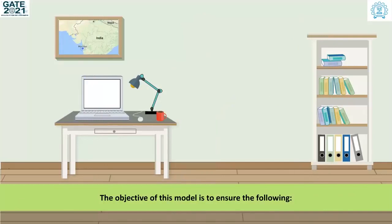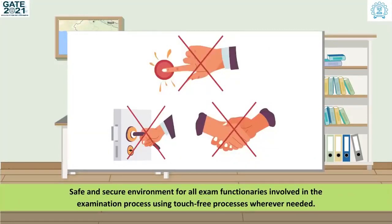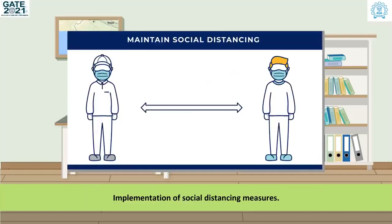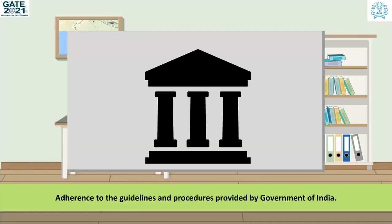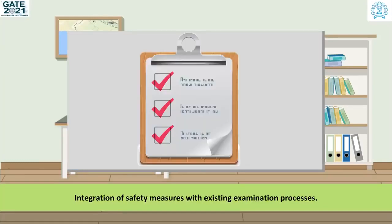The objective of this model is to ensure the following: a safe and secure environment for all exam functionaries involved in the examination process, using touch-free processes wherever needed; implementation of social distancing measures; adherence to the guidelines and procedures provided by the Government of India; and integration of safety measures with existing examination processes.